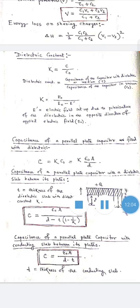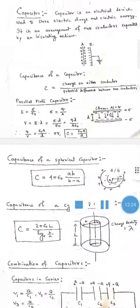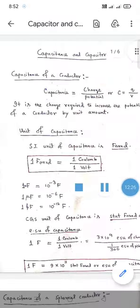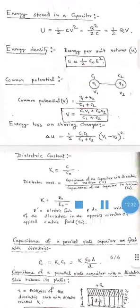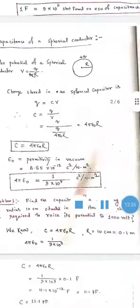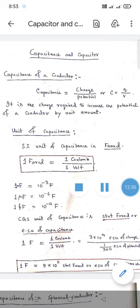For a parallel plate capacitor with a conducting (metallic) slab of thickness t inserted between its plates, the capacitance becomes C = ε₀A/(d − t). These are the key formulas on the topic of capacitance and capacitor. In the next video, some numerical problems on capacitance and capacitor will be discussed.